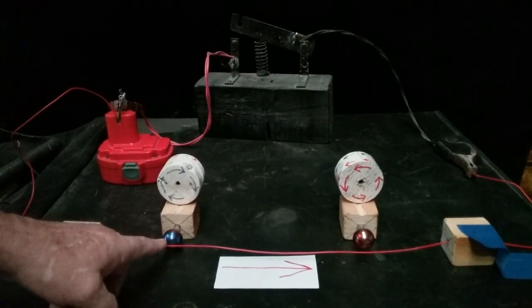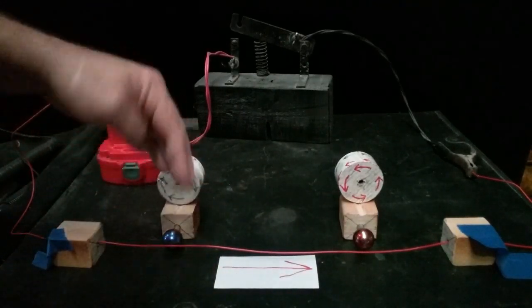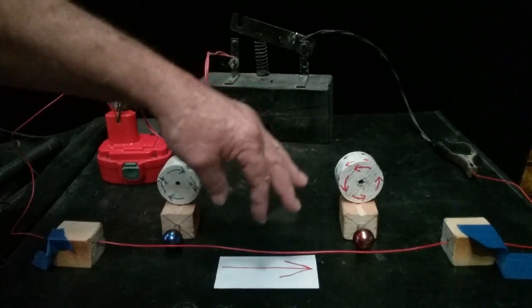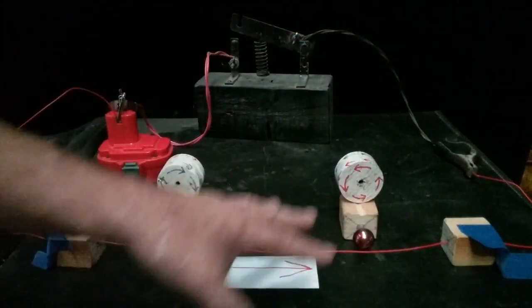Now if I put these magnets on this side, it's going to reverse. And if I change the direction of the current, this is all going to reverse. So I can change the direction of the current pretty quickly.